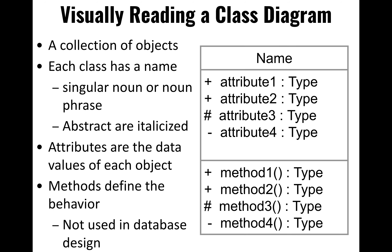Here's an example of class diagrams. We have the name of the class and the attributes, whether they're public, private, or protected — represented by plus, hash, and minus. Each attribute has its own data type. Down below we have the methods, but we're not going to be using that in this class — we can skip over the behaviors and leave that section empty.